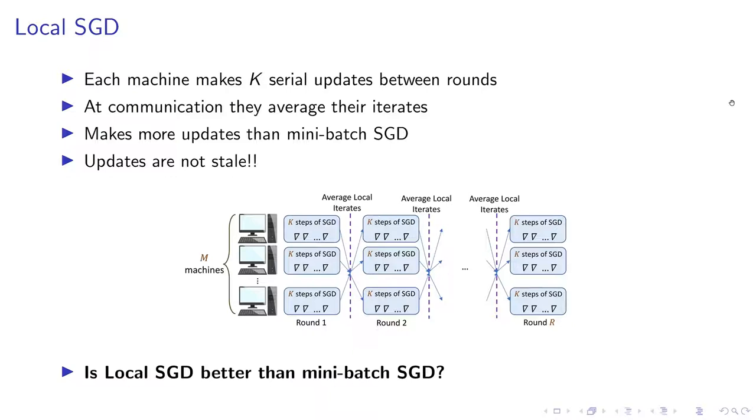On the same spectrum is something called local SGD, where instead of making one single update with these K stochastic gradients, you make K local updates on each machine. This sounds like an interesting algorithm because each of the updates that a local machine makes on itself is less stale compared to the mini-batch SGD update. In some sense, I'm making better use of my computation power between each communication round. But is this intuition true, is local SGD actually better than mini-batch SGD? This is the question we want to answer from an optimization perspective.